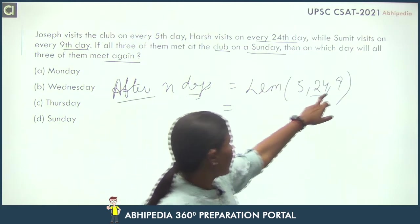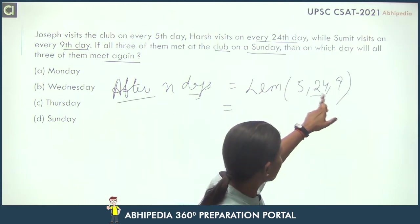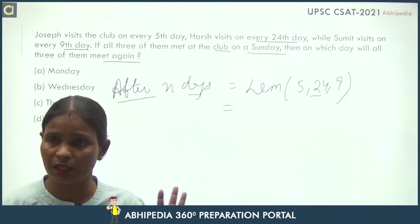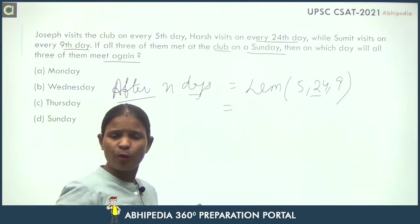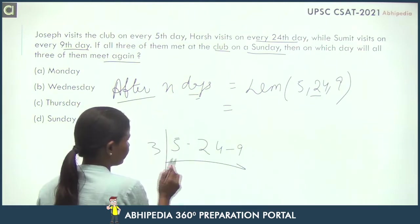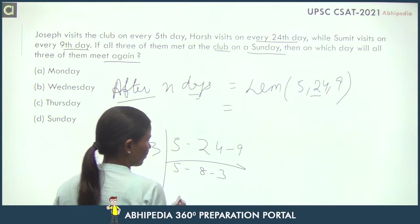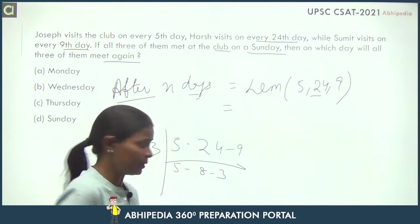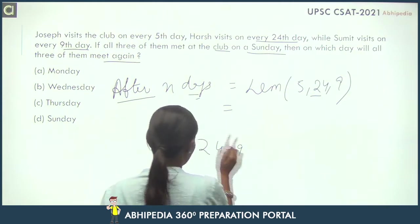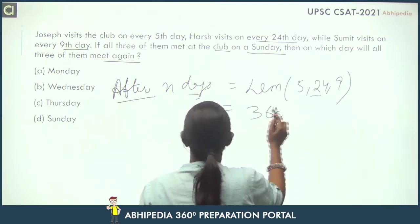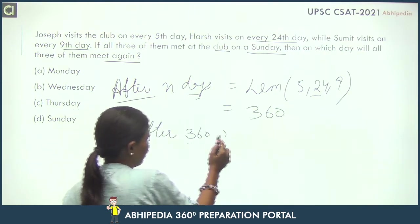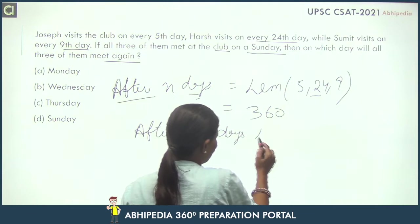The LCM comes out to be 360 — 9 × 5 × 8 = 360. So the LCM of 5, 24, and 9 is 360. You can also calculate the LCM directly by multiplying the factors together to get 360. This means after 360 days, they will meet again.